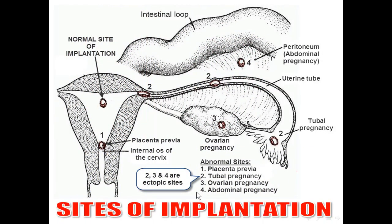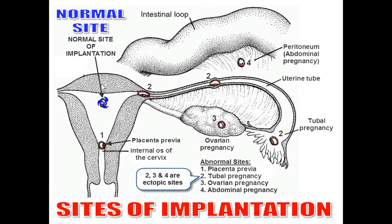Now, sites of implantation — a very important topic. We have normal site and abnormal sites. The normal site: remember three points — number one, in the upper part; number two, posterior wall of the body of the uterus; and number three, in the midline. So the normal site of implantation is in the upper part of the posterior wall of the body of the uterus, in the midline.